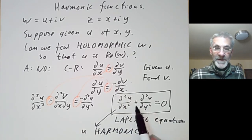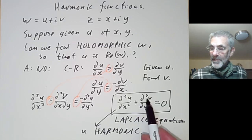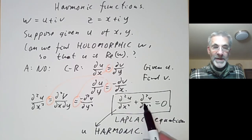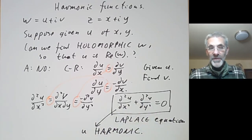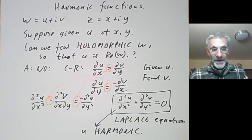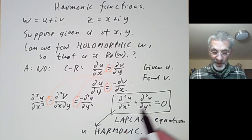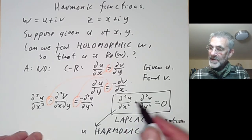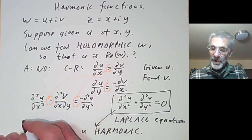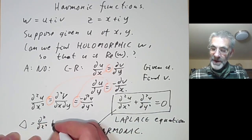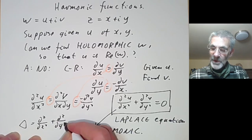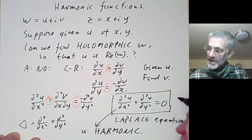Functions that satisfy this equation are called harmonic functions. This equation has a physical interpretation: it gives the steady-state heat distribution in a planar region. If you fix the temperature on the boundaries and let the plate reach a steady state, that steady state satisfies this equation. It's also written using the Laplace operator Δ = d²/dx² + d²/dy², so it just says Δu = 0.